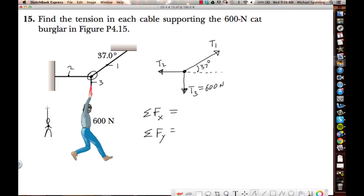What forces are acting on the cat burglar? What's holding the cat burglar up? T3. What's pulling the cat burglar down? His weight, which is 600. Is the cat burglar accelerating? No. So that means that T3 and the 600 have to be equal. So we know that T3 is 600.